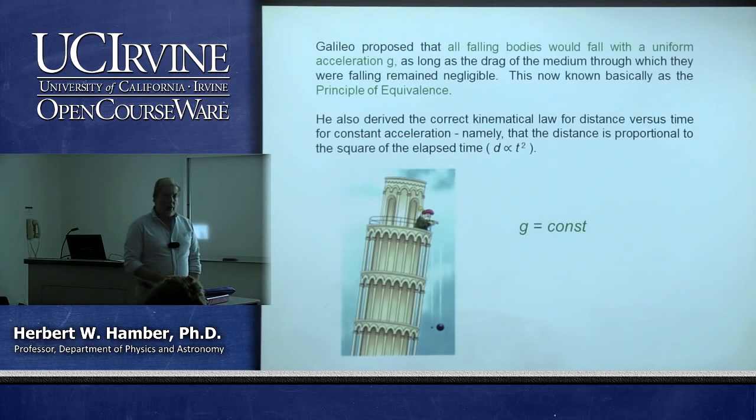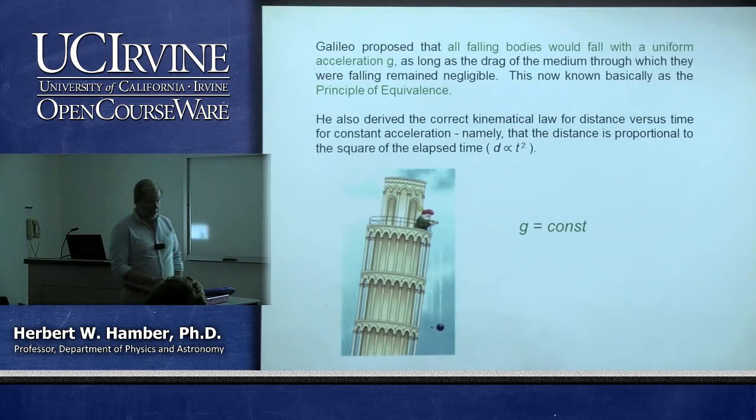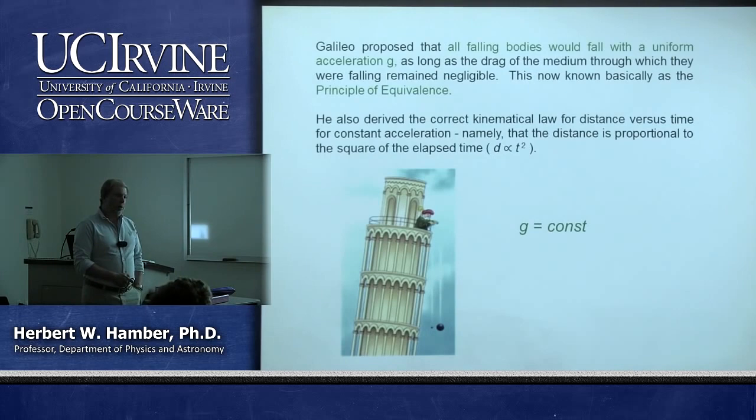The other important discovery Galileo made is that in the absence of friction or drag, all bodies fall with the same acceleration—g is constant. In modern terms, this is called the principle of equivalence: the principle of equivalence between inertial and gravitational mass.